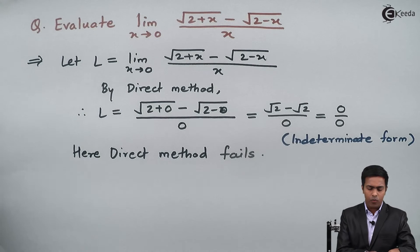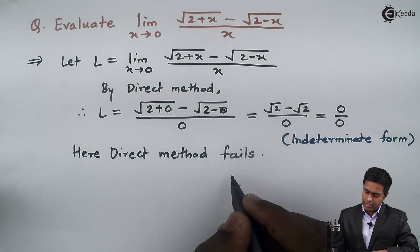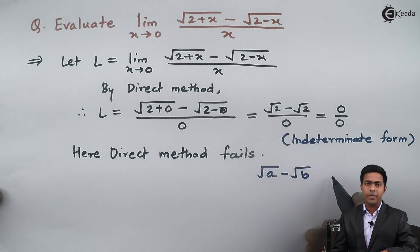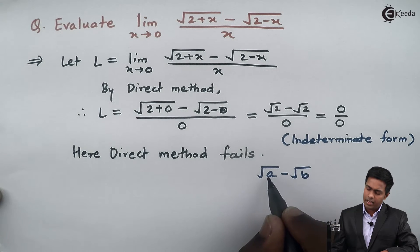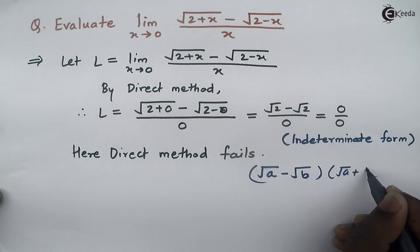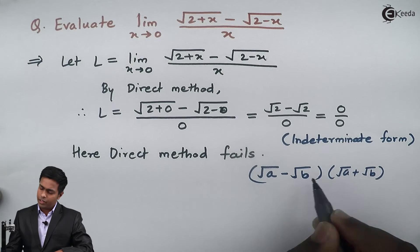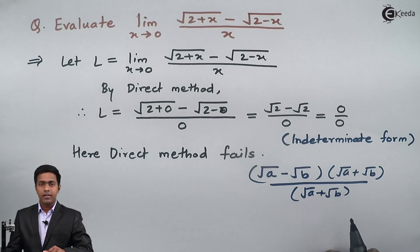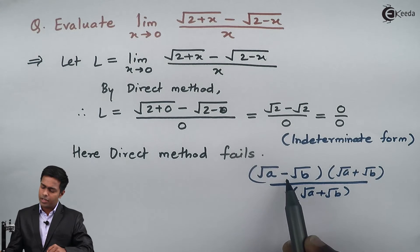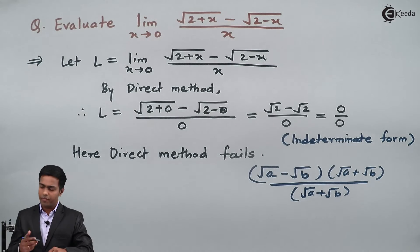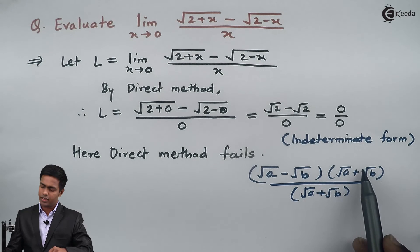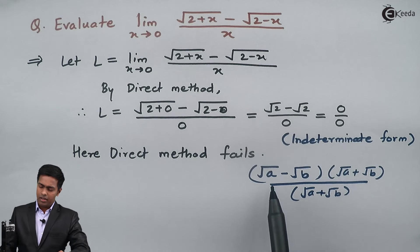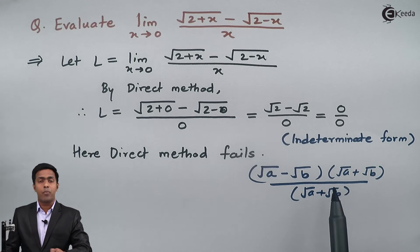To understand rationalization: whenever we have root(a) minus root(b), we multiply both numerator and denominator by root(a) plus root(b). Similarly, if we have root(a) plus root(b), we multiply by root(a) minus root(b). In rationalization, you multiply by the term which is opposite in sign — the conjugate.